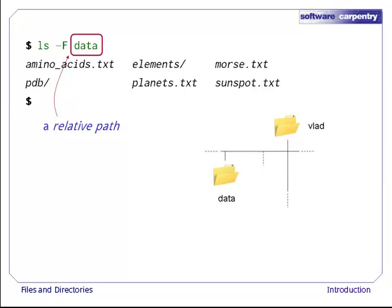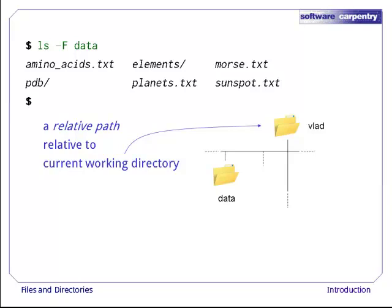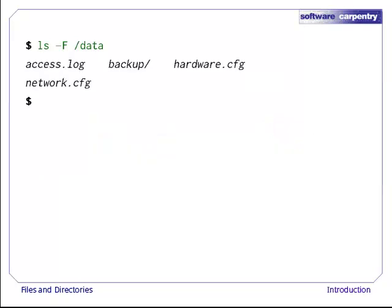Since it doesn't begin with a slash, it's a relative path, i.e., it's interpreted relative to the current working directory. If we run ls -f slash data, we get a different answer, because slash data is an absolute path.